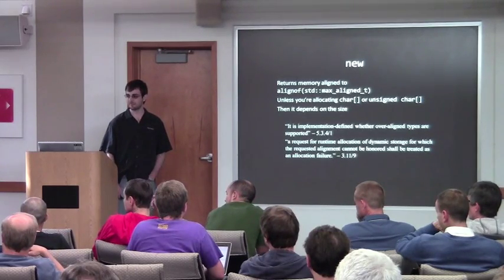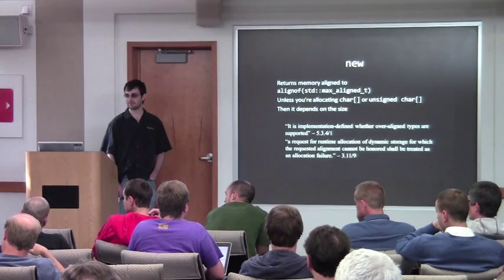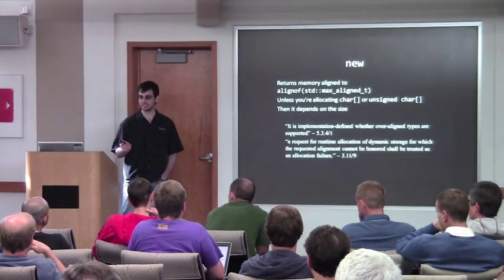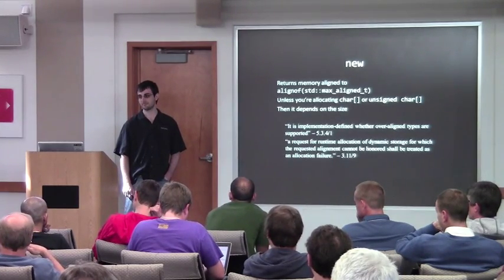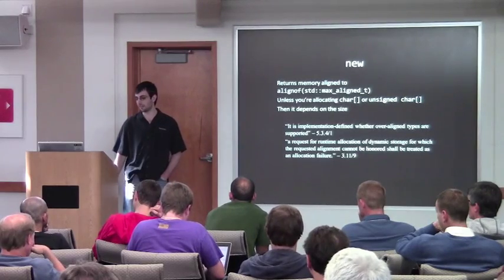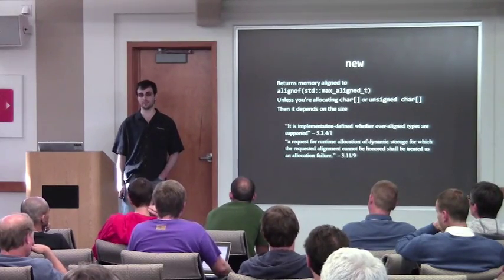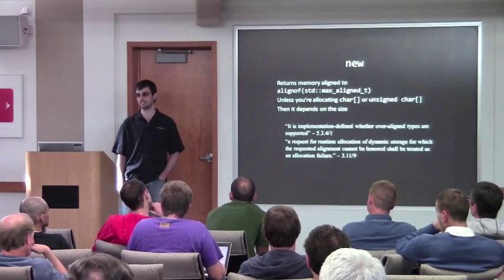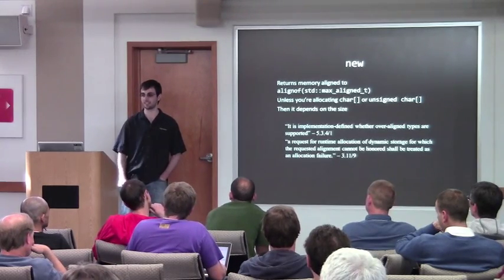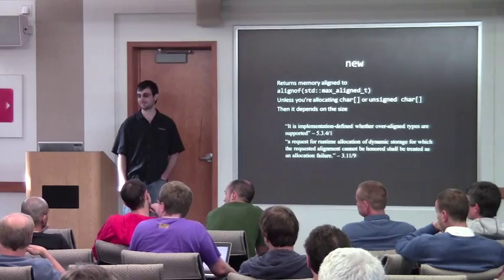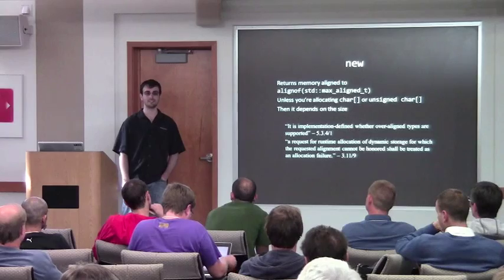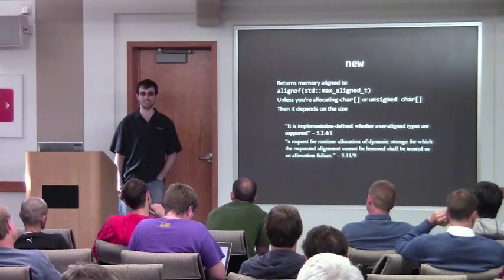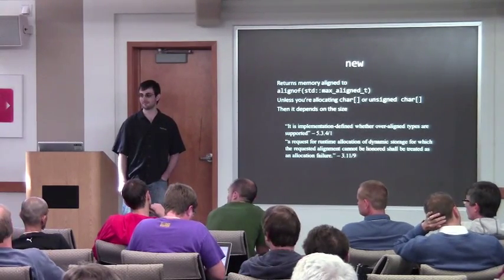The current draft states that `char`, `signed char`, and `unsigned char` shall have the weakest requirements. This is the current draft as of last month. The FDIS for C++11 does not include `signed char` — so somebody has updated this.